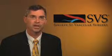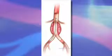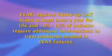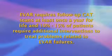In the past decade, an alternative to open aneurysm repair has emerged and it is currently used to treat the majority of aneurysms located below the kidney arteries. This newer approach, called endovascular repair or EVAR, is performed by making small incisions in each groin and sliding a cloth-covered stent in place inside the blood vessel, essentially relining the aorta inside the aneurysm and preventing blood pressure from pushing on the aneurysm wall. While slightly less risky initially and having a shorter recovery period than open surgical aneurysm repair, EVAR requires follow-up CAT scans at least once a year for life and 10-15% of patients require additional interventions to treat problems related to EVAR failures.